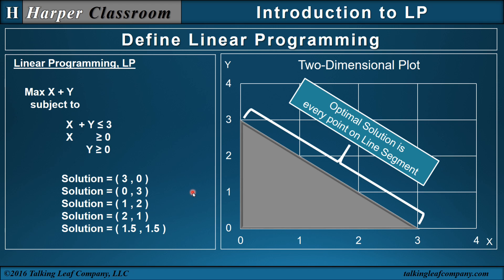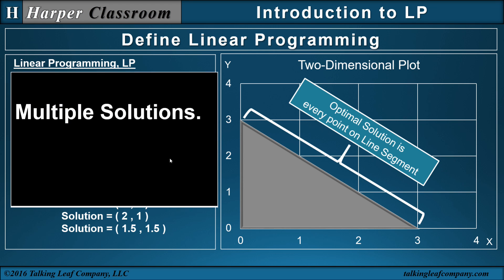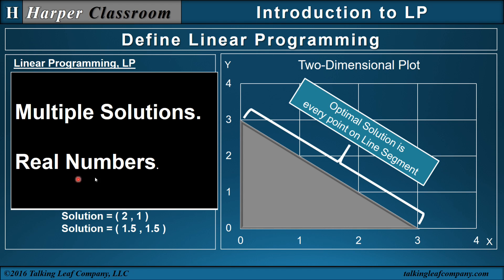This brings up a couple of very important points. The first is multiple solutions — here is a math problem where I want an optimal solution and the answer is an infinite number of points, not just one. The second is that the solution is a real number — it can be integer, non-integer, rational, or irrational. If you want answers to be integer or some special type of number, that's a different type of math programming.